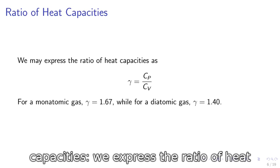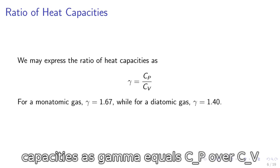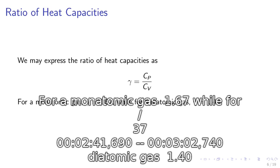The ratio of heat capacities. We express the ratio of heat capacities as gamma equals CP over CV. For a monatomic gas, gamma equals 1.67, while for a diatomic gas, gamma equals 1.40.